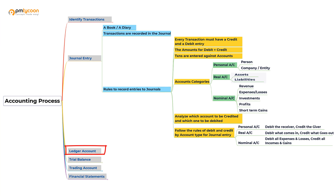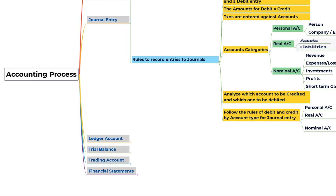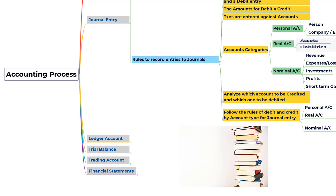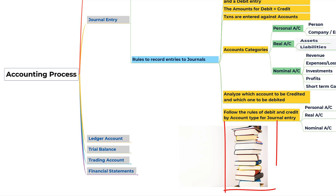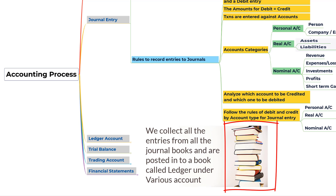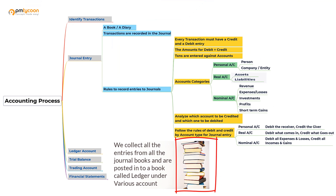Let us look at the ledger account. Let's first understand what it means by a ledger. Ledger in actual sense means a collection of books. In business accounting it means a collection of journals. It is called a ledger account because it takes out all the entries that are there in journal or many journal books, and these entries get posted into various accounts in the ledger account.